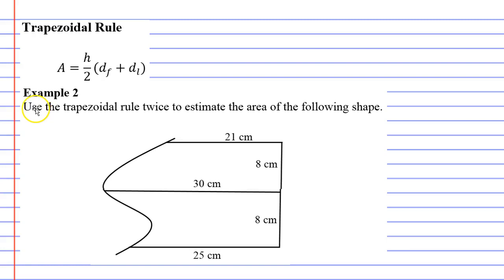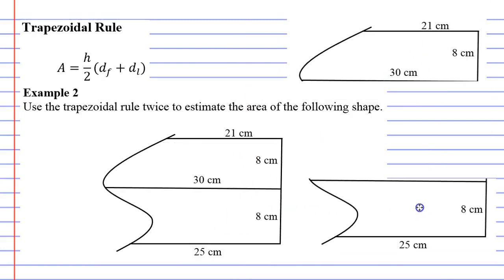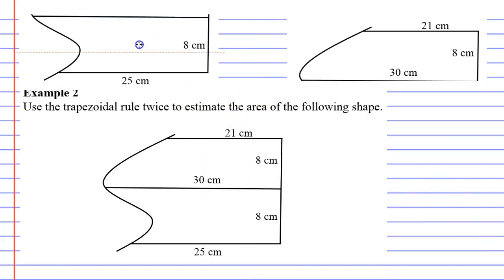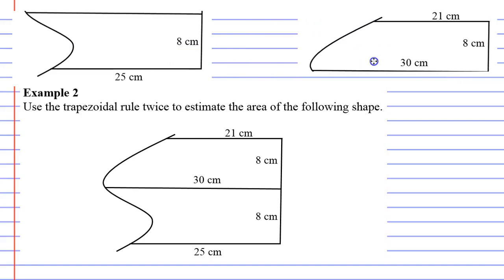And they've actually given you a little suggestion. They've said use the trapezoidal rule twice to estimate the area of the following shape. So what I've actually done is I've actually split this in half so you can calculate each piece separately. So here's the top piece, and here is the bottom piece. I'm just going to cover my formulas because we can just recopy that down later.